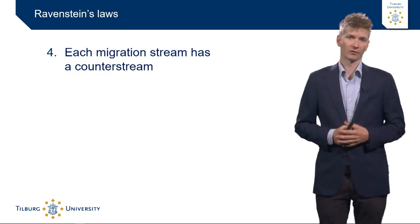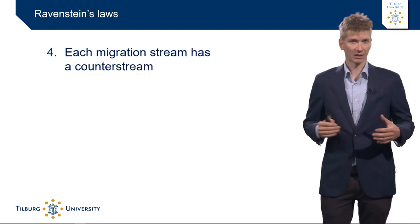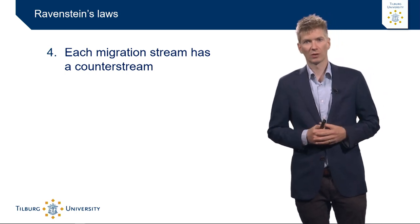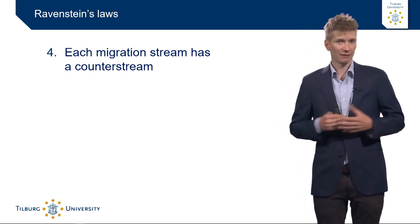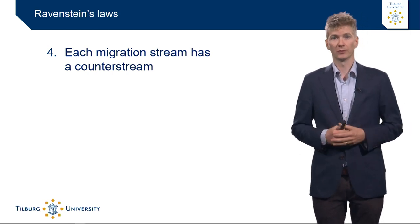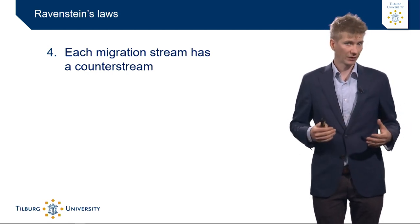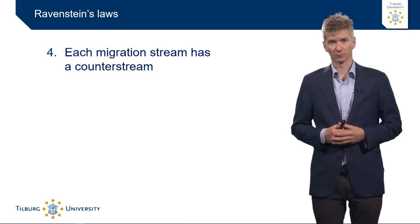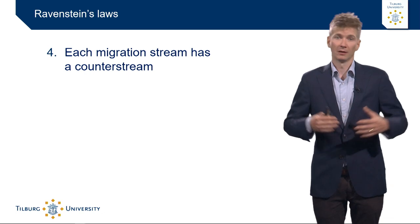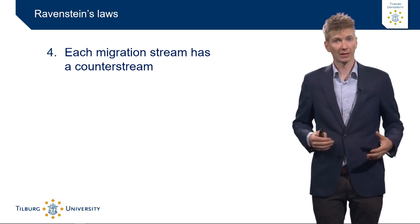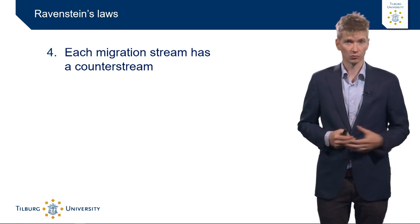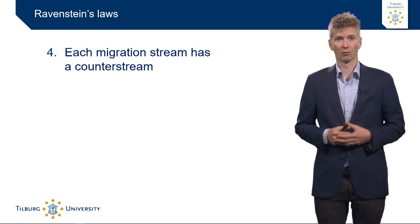The fourth law of Ravenstein is that each migration stream has a counter stream. This simply means that if people move from Poland to the United Kingdom, you also have people moving from the UK to Poland — whether British citizens relocating or Polish migrants returning to their country of origin.